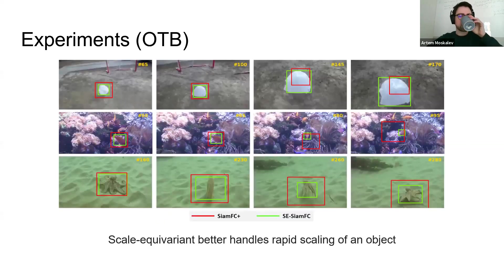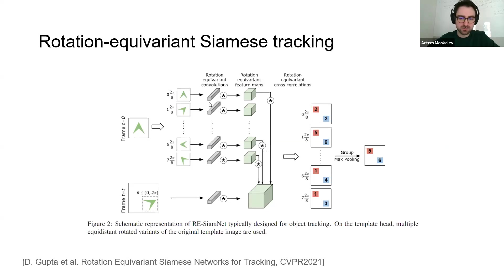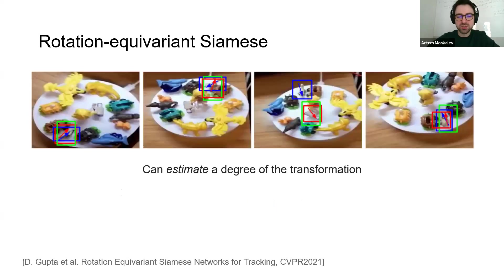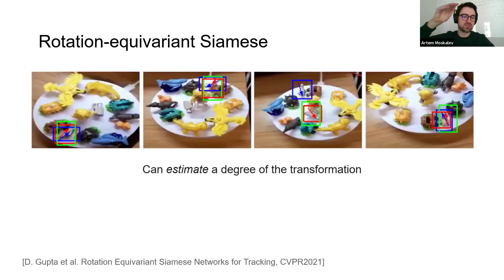On standard benchmarks like OTB and VOT, we boost the baseline performance by 17% on VOT, which is a significant improvement. We also analyzed performance across different factors of variation in video: scale variation, rotation, occlusion, and others. OTB contains labels for each video by factor of variation. The scale-equivariant model outperforms the conventional model in all scenarios — not just scale estimation. We attribute this to scale being an essential property of every image, present implicitly at the pattern level: edges may appear at multiple scales, and a scale-equivariant network can effectively exploit this symmetry. We also briefly mention related work by Deepak Gupta applying the same idea to rotation-equivariant Siamese networks, also showing tracking improvements and enabling prediction of object orientation.